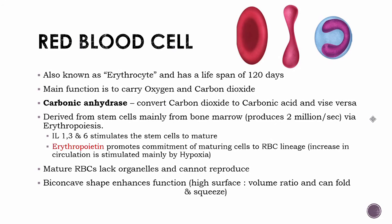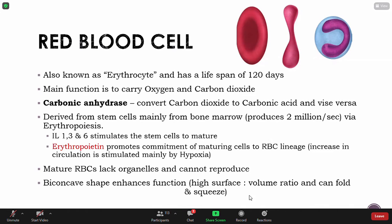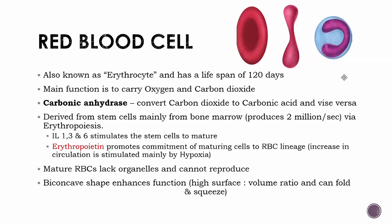RBCs uniquely have very few organelles — very few mitochondria, very few Golgi apparatus, and no nucleus. Why? Their main function is only to carry oxygen and carbon dioxide. They have no other purpose in life but to transport oxygen and carbon dioxide, so the nucleus, mitochondria, and other organelles are not needed. Hemoglobin and carbonic anhydrase are already there.